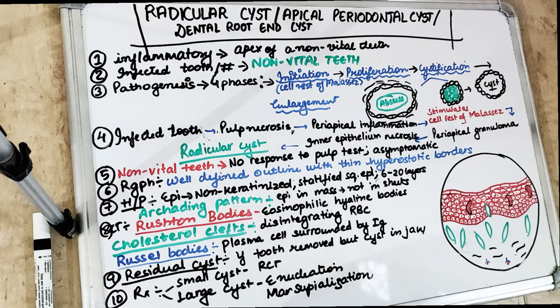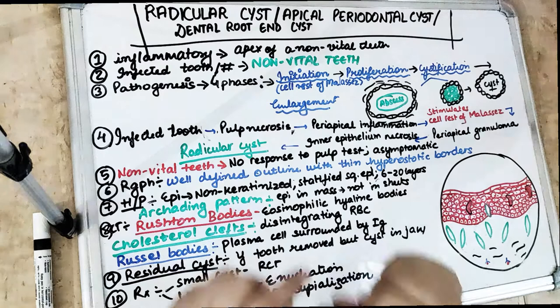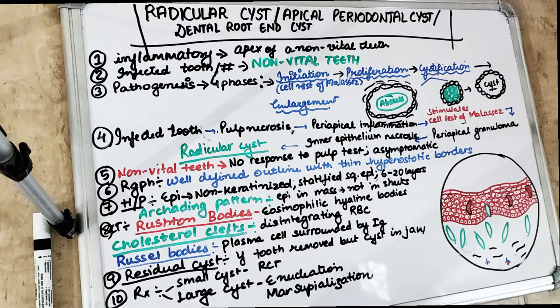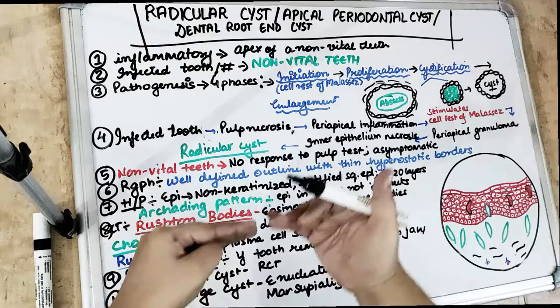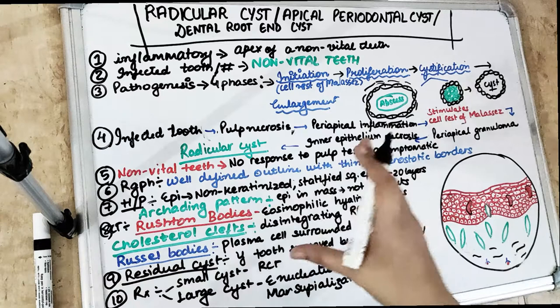Welcome back to another 10-in-10 series where we cover each topic under 10 headings in 10 minutes. Today's topic we are going to talk about is the radicular cyst, or the apical periodontal cyst. This cyst, as the name suggests, will be associated with non-vital teeth. When there is pulpal inflammation or pulpal infection, after that when we get any cyst development, that is the radicular or apical periodontal cyst.